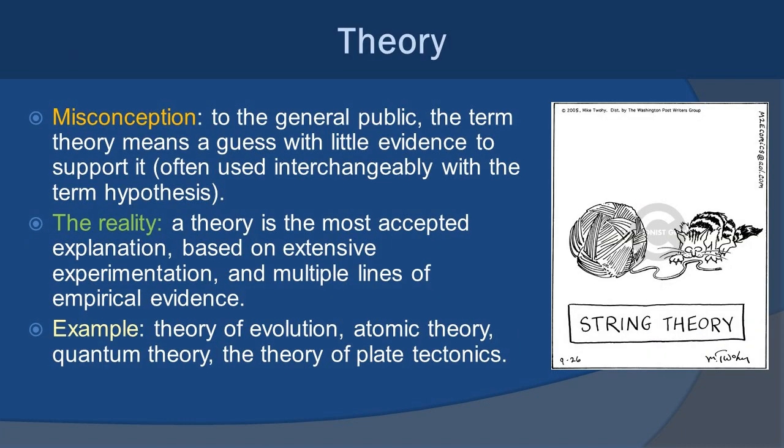Unfortunately, the general public uses the term theory like it's something that's very unreliable. This could not be farther from the truth. In reality, a theory is one of the most accepted explanations based on extensive experimentation, multiple lines of empirical evidence. When the scientific community comes into consensus about an actual theory, it's not a trivial thing. Examples of theories are like the theory of evolution, the atomic theory, quantum theory, the theory of plate tectonics. These are all things that have been well-documented and have very accurate predictions of outcomes that we commonly see in our everyday lives.